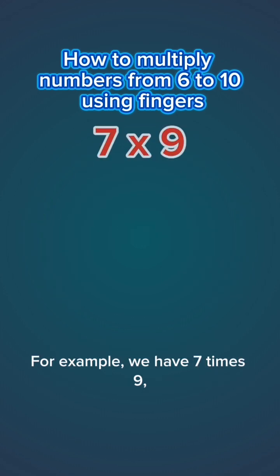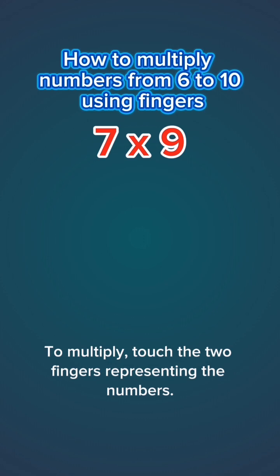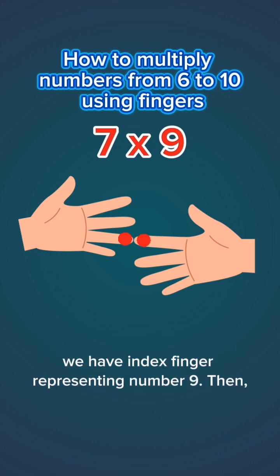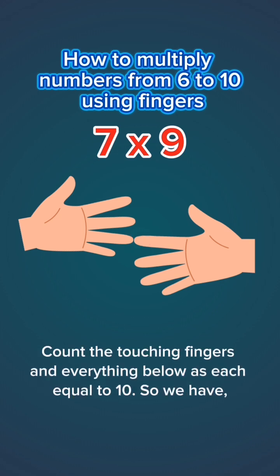For example, we have 7 times 9. To multiply, touch the two fingers representing the numbers. From the left we have the ring finger representing the number 7, while on the right we have the index finger representing number 9. Then count the touching fingers and everything below as each equal to 10.